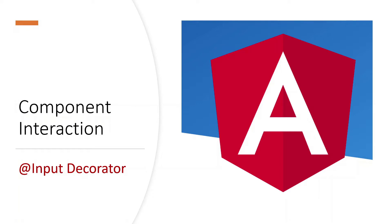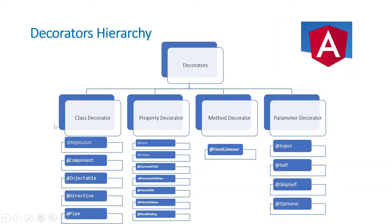So without getting late, let's get started. In the previous video we have seen that decorators are of four types: class decorator, property decorator, method decorator, and parameter decorator. In property decorator we have the @Input decorator and the @Output decorator, and these both decorators are used to interact with the component.